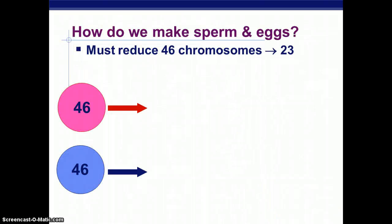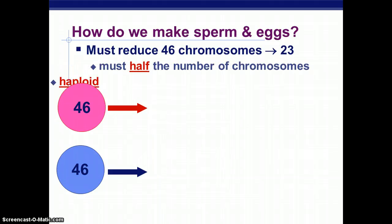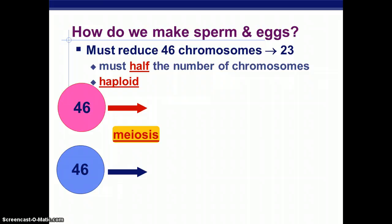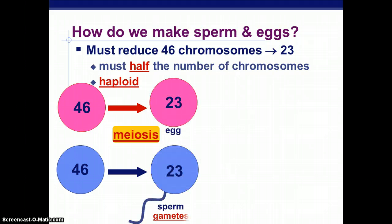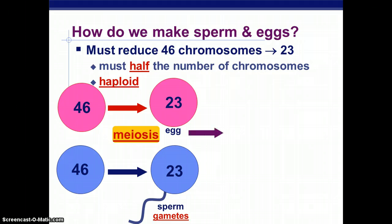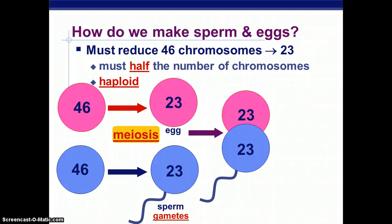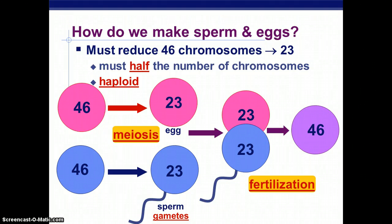So how do we make sperm and eggs? We have to reduce 46 chromosomes to 23 — we must half the number of chromosomes. When you half the number of chromosomes, this is called haploid. So a cell with 46 chromosomes undergoes meiosis and ends up producing egg and sperm that have 23 chromosomes each. Both egg and sperm are called gametes. When egg and sperm join, this is called fertilization, and it creates a zygote with 46 chromosomes.